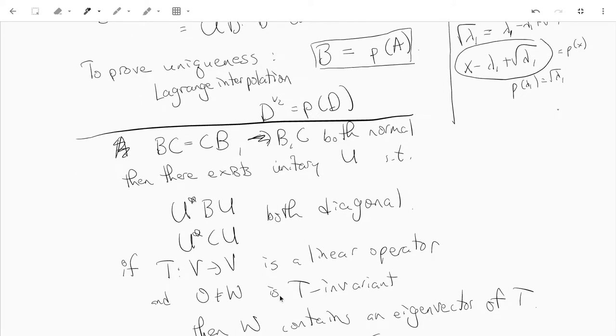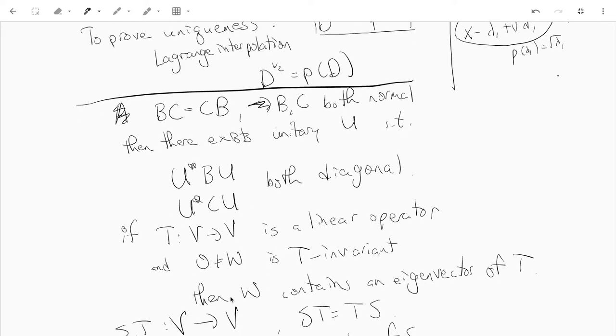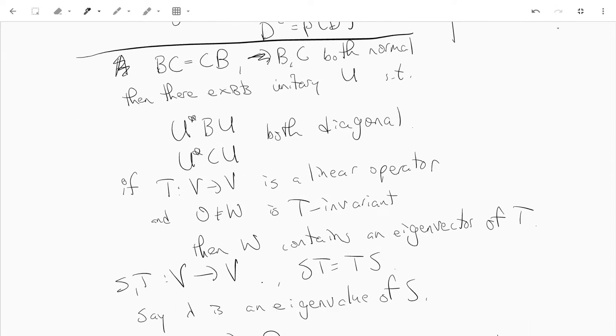...stuff with T-invariant subspaces. So if we have a linear operator from V to V and we have a T-invariant subspace W, then W contains an eigenvector of T.